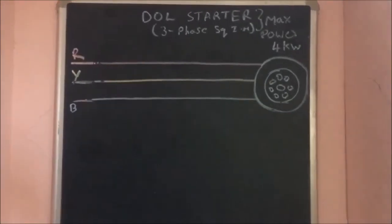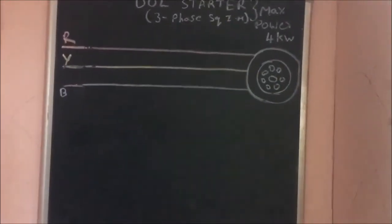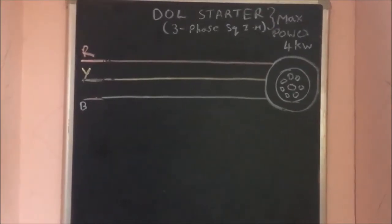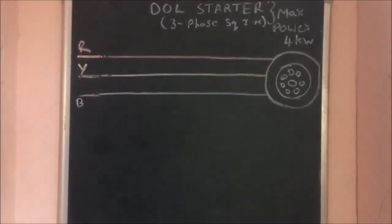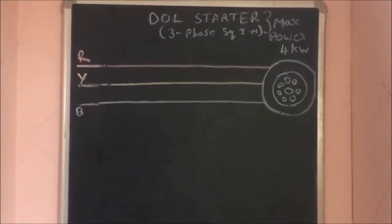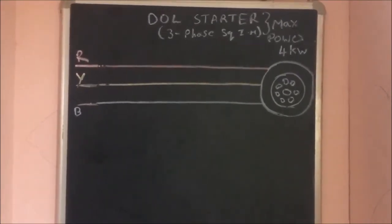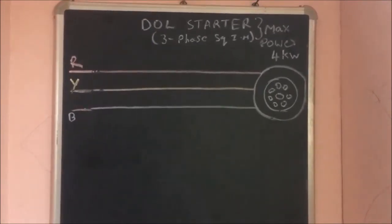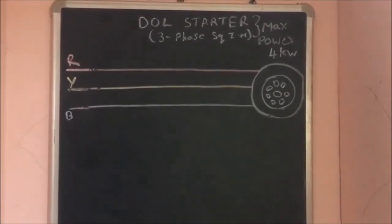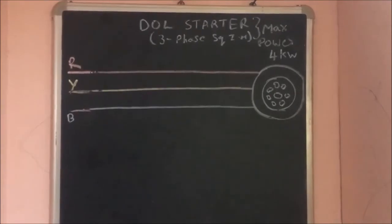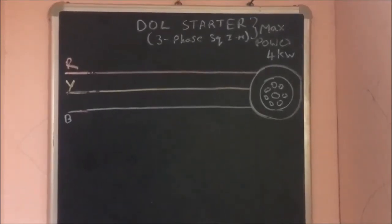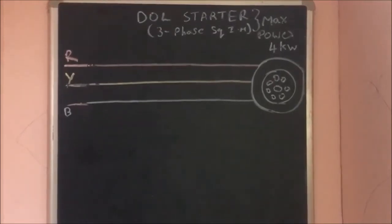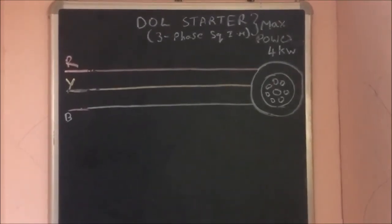Due to the increased losses, the supply voltage will be reduced, and other equipment may get damaged. However, for low power rating motors, power loss is less, so we can give the direct supply to the motor. That is why it is called a direct online starter.